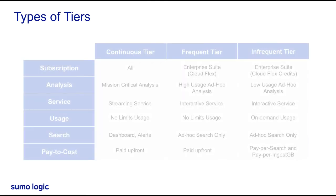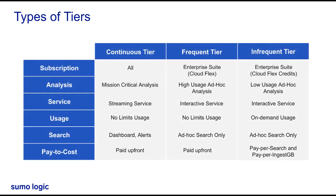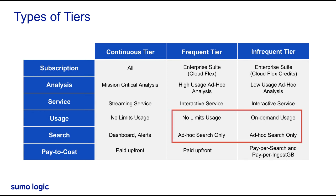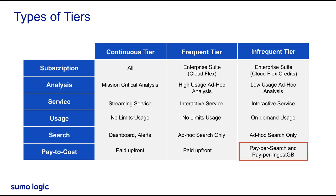So how does SumoLogic's licensing help you? This table shows a high-level overview. Our licensing introduced two additional tiers: frequent and infrequent. The frequent tier is search-only — any data routed there we're going to be searching frequently, with no limits on that data. The infrequent tier is also search-only, however it is on-demand usage at a fraction of the cost; we consume SumoLogic credits based on how many times we're scanning and searching that data. For continuous and frequent tiers, the costing is per ingest GB, inclusive of all features. For the infrequent tier, the costing is charged per GB of ingest and based on each search.